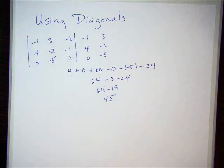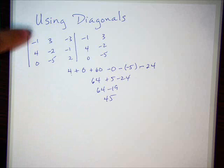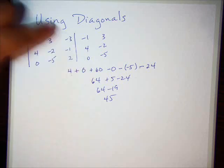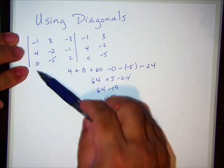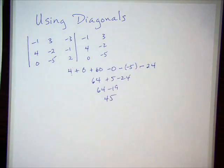Okay. Basically, using diagonals, you take the first two columns, copy them, so that you have these diagonals. So 1, 2, 3. Then you add those and go the other way. 1, 2, 3. All right. Let's do another example. Some of you might like this better. I don't know why I don't like it.